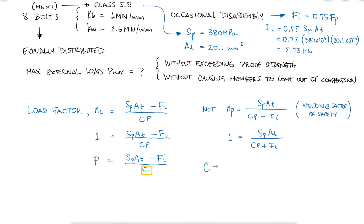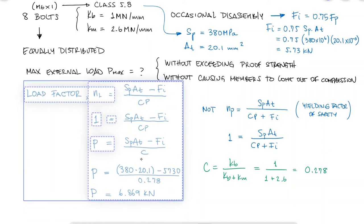The stiffness constant of the joint will depend on the stiffness of the bolt and the stiffness of the members, and therefore the maximum external load at each bolt is 6.9 kilonewtons.